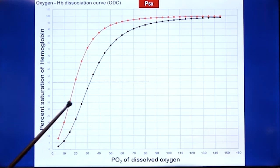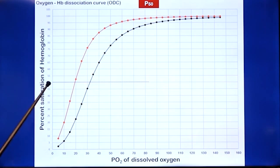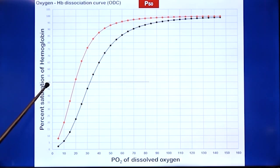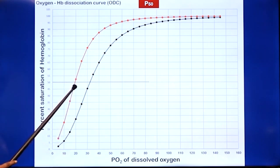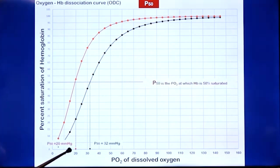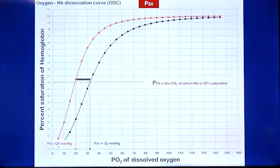P50 refers to the partial pressure of oxygen at which there is 50% saturation — meaning 50% of hemoglobin molecules are deoxy and 50% are oxy. This helps compare hemoglobin affinity for oxygen. In a left-shifted state, P50 is about 20 mmHg; in a right-shifted state, P50 is about 32 mmHg. It quantifies the degree of shift and is useful when comparing hemoglobin affinity.